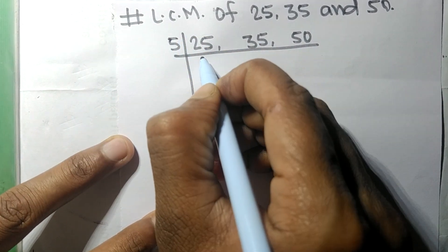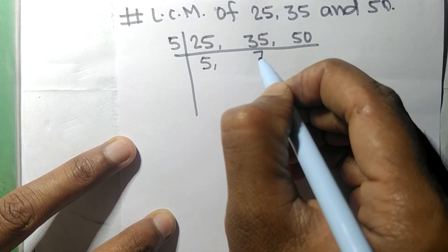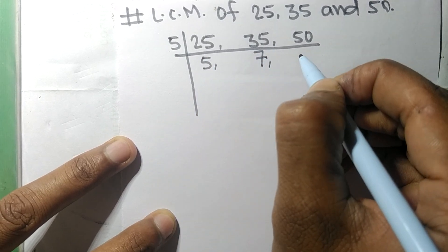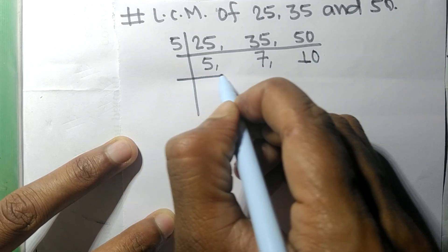5 times 5 means 25, 5 times 7 means 35, 5 times 10 means 50. So like this, 5 and 10 are divisible by 5.